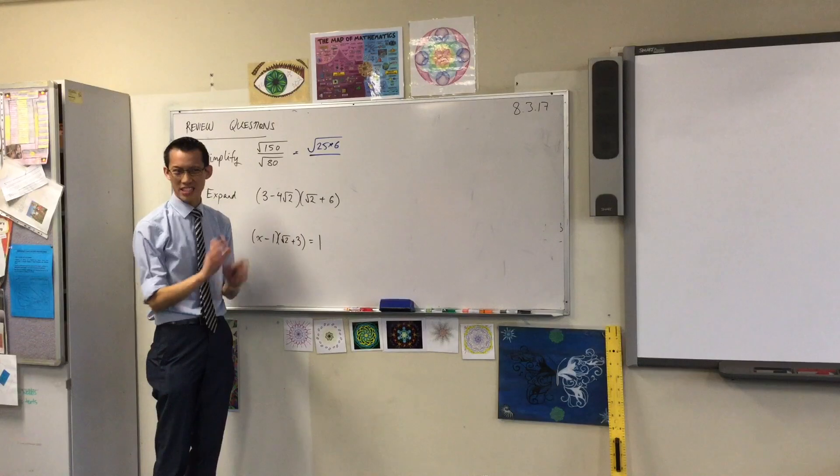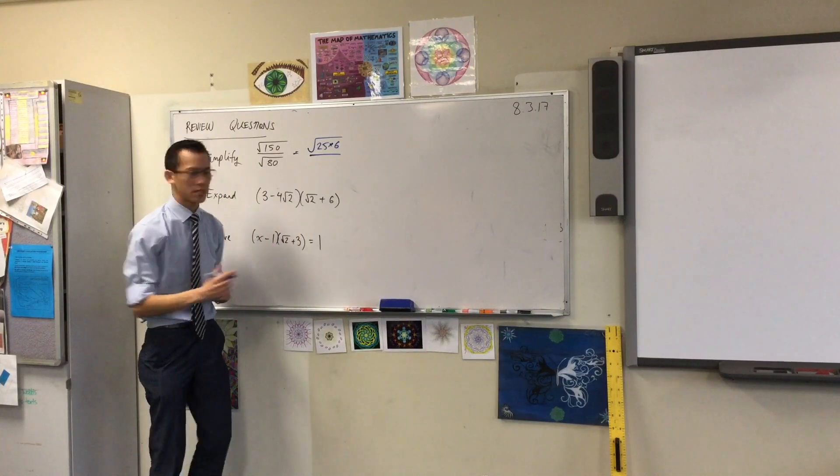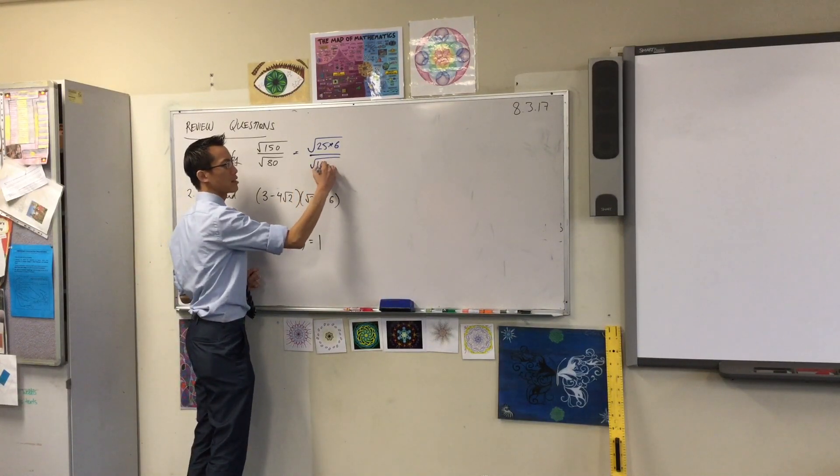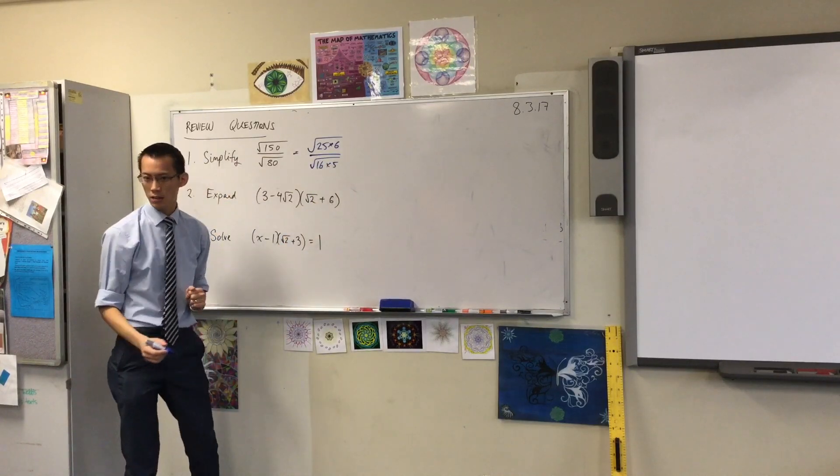With the denominator, you can do something similar, but it's a different square number. What is it? 16. So I can write this as 16 times 5. Is that okay?